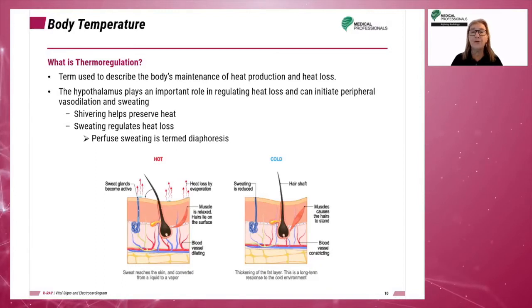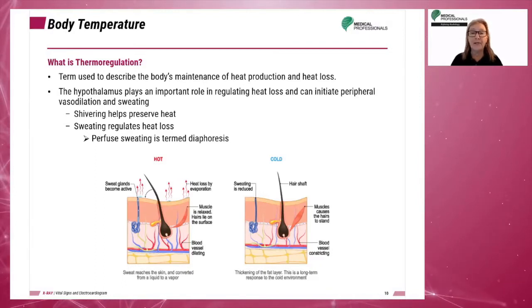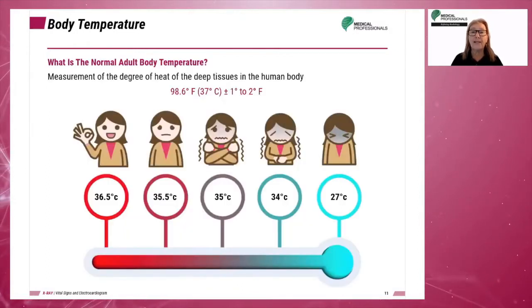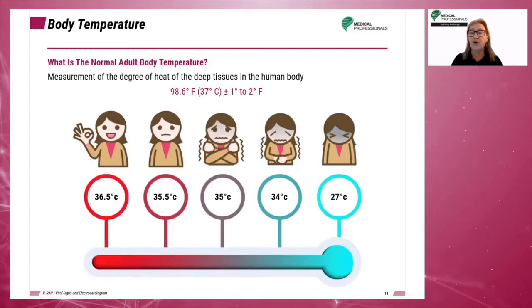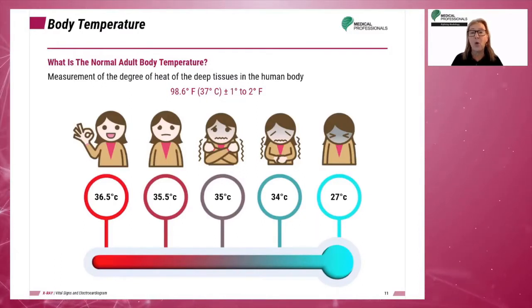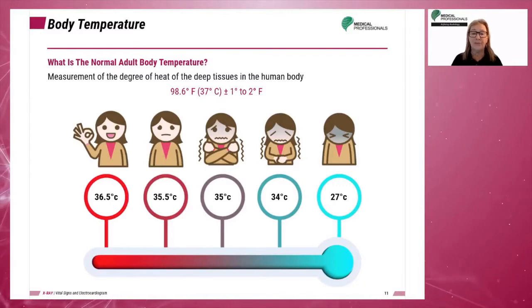Profuse sweating is termed diaphoresis. The normal range for an adult body temperature is 98.6 degrees Fahrenheit or 37 degrees Celsius, with a plus or minus 1 to 2 degree variation.